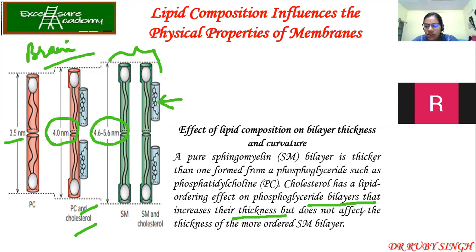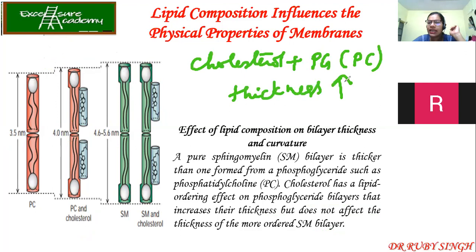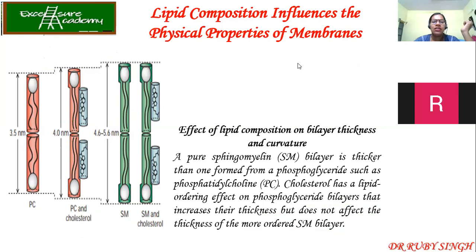To summarize: whenever cholesterol interacts with phosphoglycerides like PC (phosphatidylcholine), the thickness of the plasma membrane increases. This is a key distinction — cholesterol increases the thickness of phosphoglyceride bilayers, but does not significantly alter the already-ordered sphingomyelin bilayers.